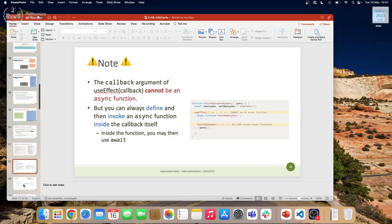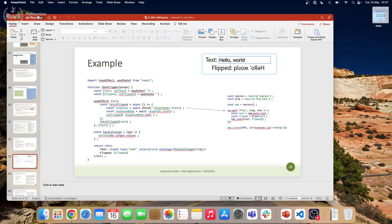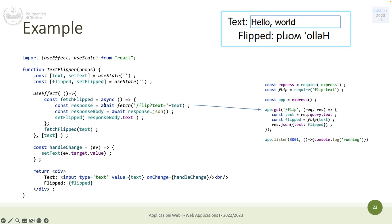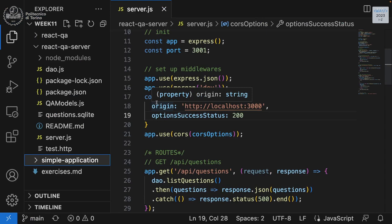Let's stop here from the slides and continue next week. There's another example here showing a fetch where instead of async/await you have a function defined as async inside the useEffect, with an await, getting the response as JSON and then setting state with a specific property of the response. If you copy this code you should be able to flip the words you type in a text field, like a mirror.